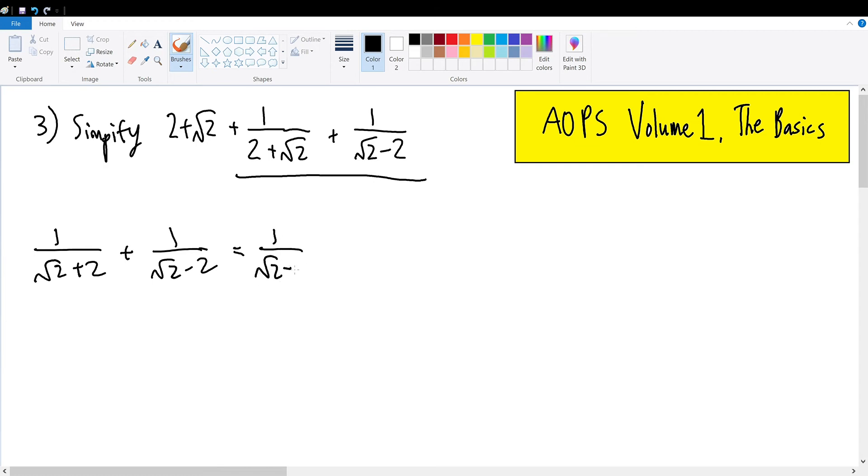This is equal to 1/(√2 + 2) × (√2 - 2)/(√2 - 2) + 1/(√2 - 2) × (√2 + 2)/(√2 + 2). This is then equal to...